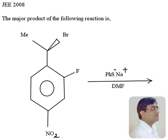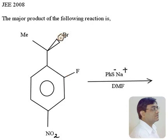This question came in JEE 2008 paper 1 and it was a very interesting question. You have PHS⁻ as nucleophile, an aryl halide, and an alkyl halide here. Aryl halides do not like nucleophilic substitution as much as alkyl halides do. However, if a strong EWG like NO₂ is present, we do have nucleophilic substitution taking place in aryl halides.